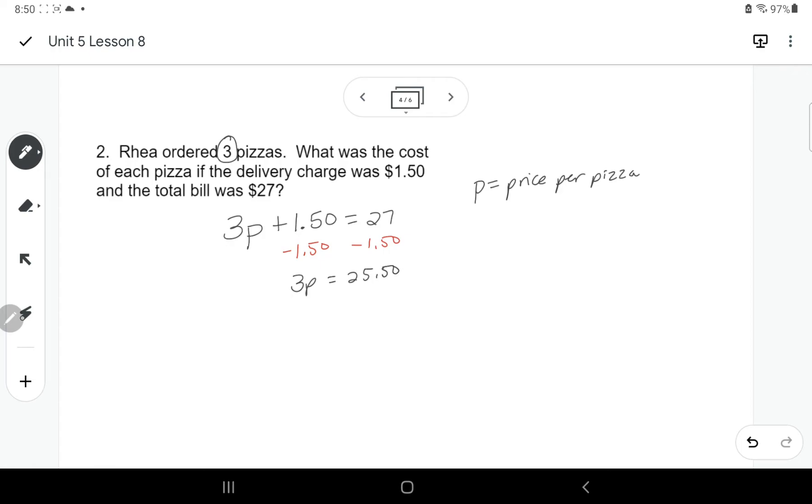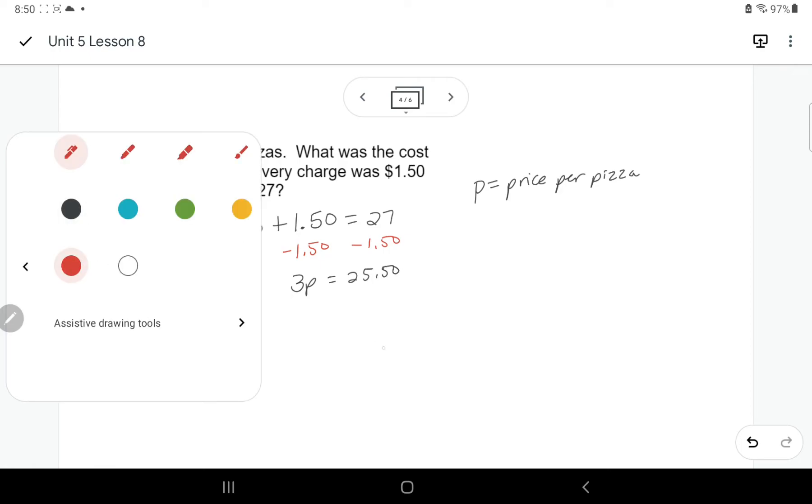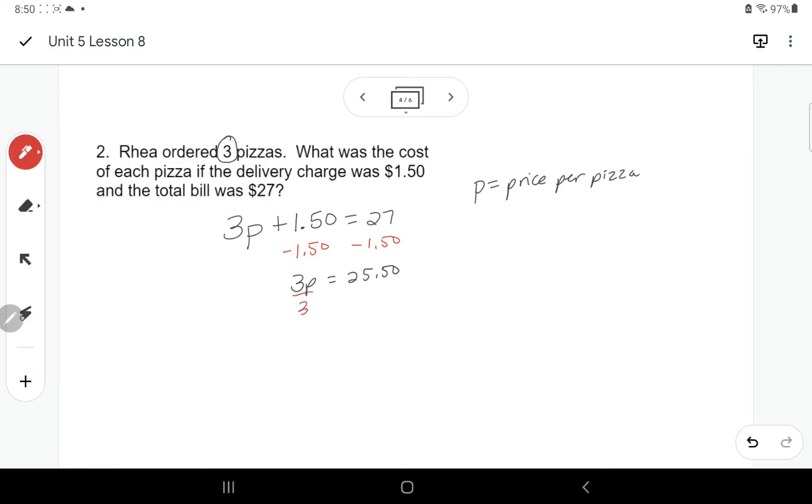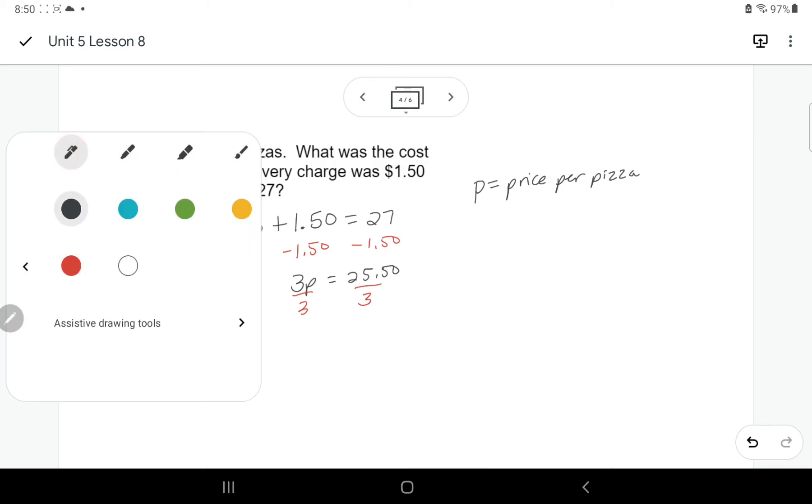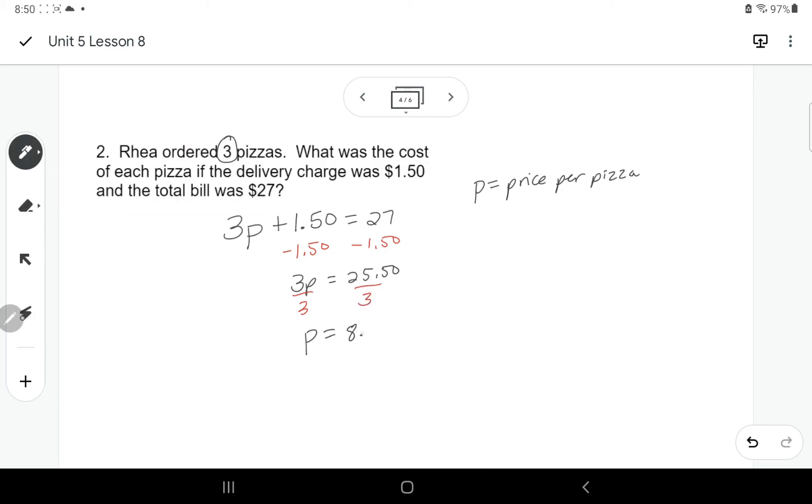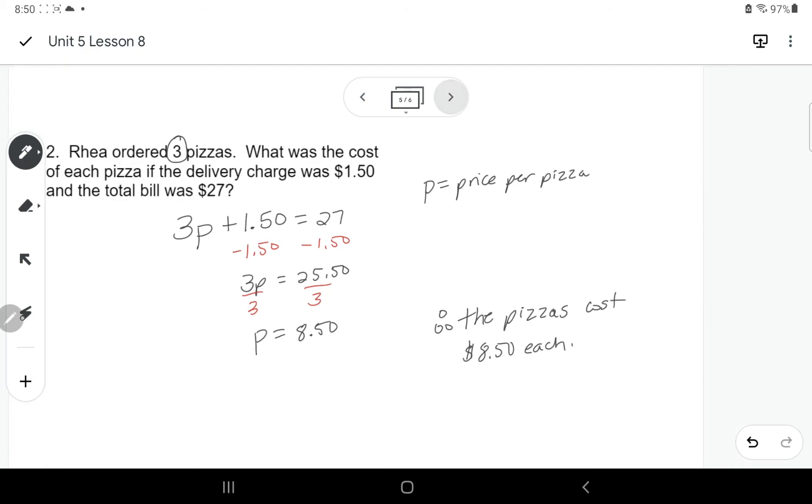So 3P equals $25.50. And then divide by 3. So P equals $8.50 per pizza. If it's a word problem we have to answer in a sentence. So we'll say, therefore the pizzas cost $8.50 each.